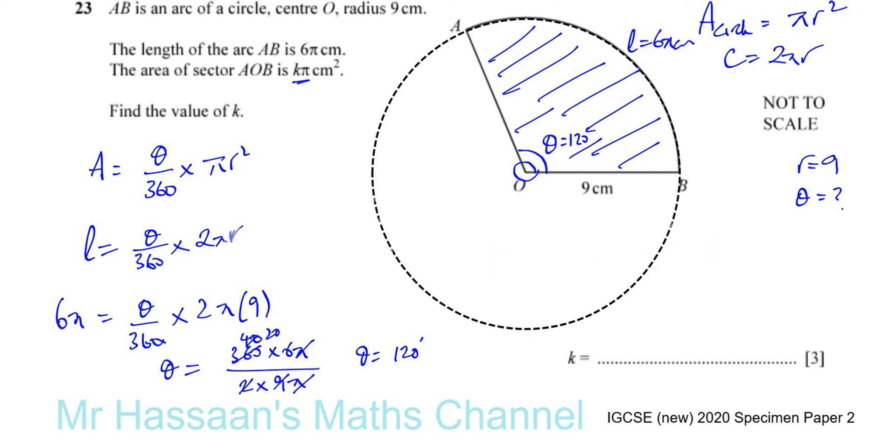Now we can find the area. The area that we need is equal to 120 over 360 times π times 9 squared.